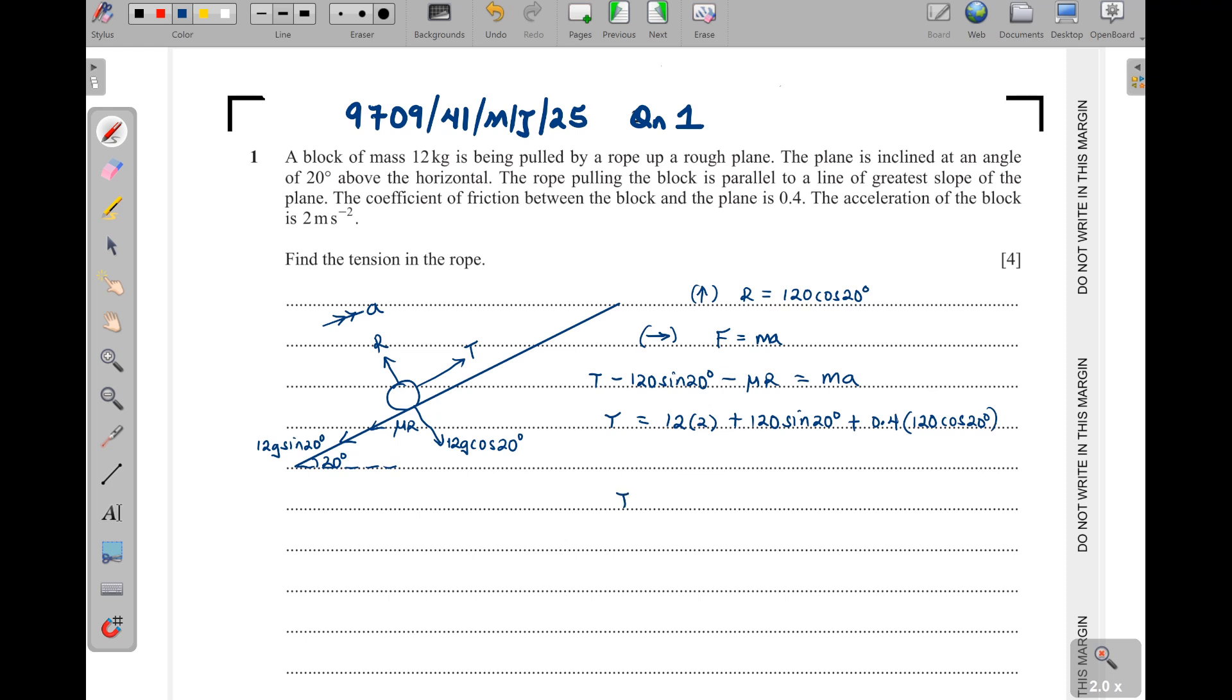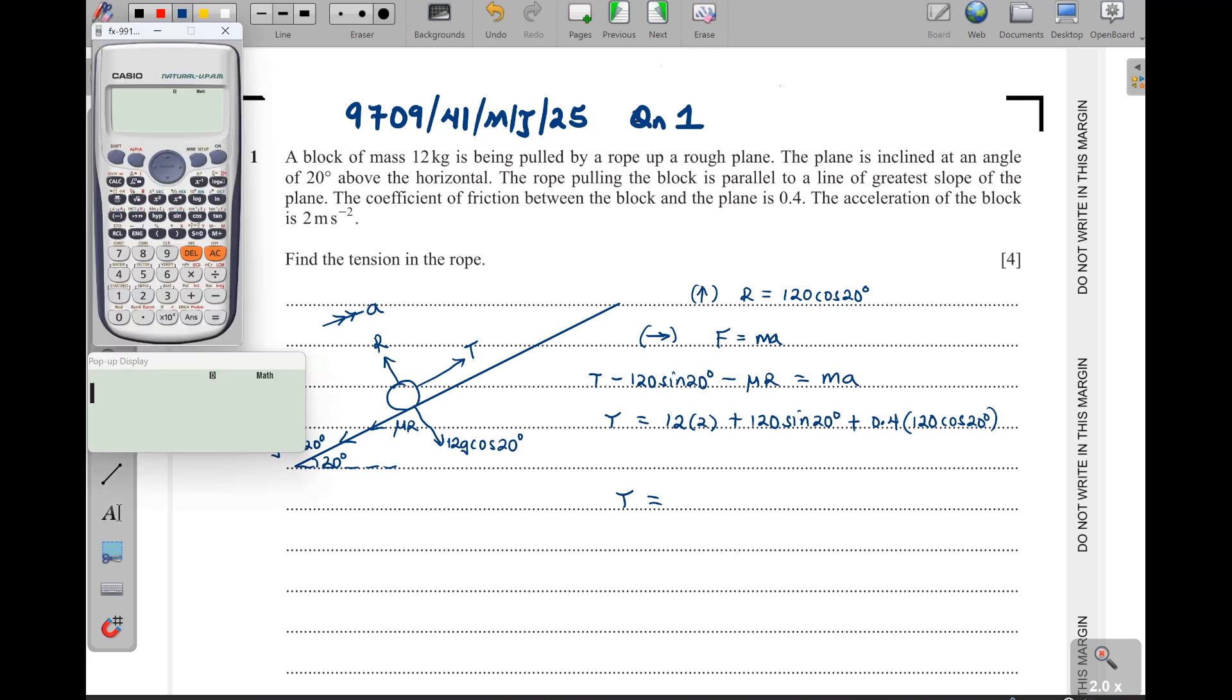So putting everything in the calculator to three significant figures, what do we get here? Now you will excuse me, my calculator is really small, but whatever I will be typing on the screen, you'll be able to see it on this pop display. So I will have 12 times 2, that is 24, then plus 120, then sine, you have to check the mode of your calculator, it has to be in degrees, then plus 0.4 into 120, then the cosine of 20.